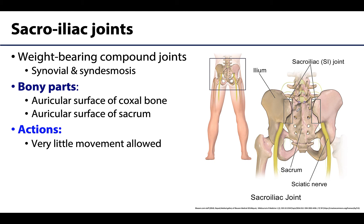The sacroiliac joints are going to be between the auricular surfaces of the coxal bones as well as the auricular surfaces of the sacrum. Both of these surfaces kind of look like little ears, and they articulate with the auricular surface of the other bone. As you can see, there are two sacroiliac joints, so these are paired because you have two coxal bones.